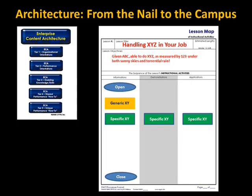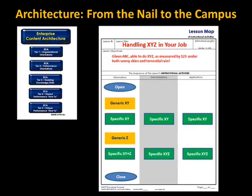Then we can have an application exercise — an authentic application exercise that is replicable of their real-world performance requirements, their job tasks, producing the outputs that they produce. But this only covers XY out of the handling XYZ. So we need to now add in the generic components, if there are such, for the Z portion of this.